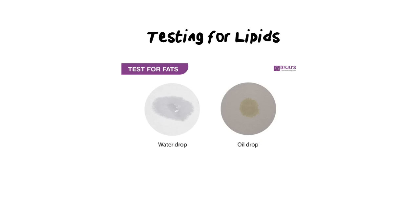To test for lipids, there is no chemical indicator added. Instead, lipids leave a greasy stain behind on filter paper. Take a drop of the unknown liquid, drop it on some filter paper, and allow it to dry. A water droplet will dry and disappear completely, but an oil droplet will leave a greasy stain that doesn't go away — it makes the page more translucent. That translucent greasy stain is the test to see whether a substance contains any fats or lipids.